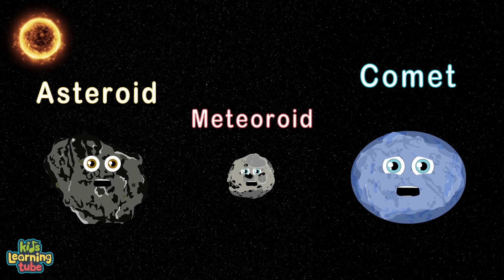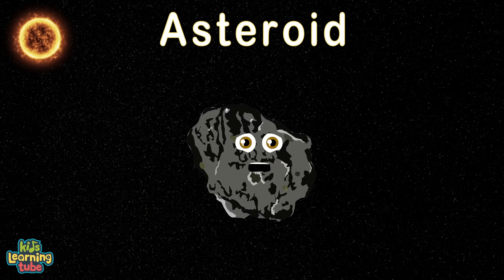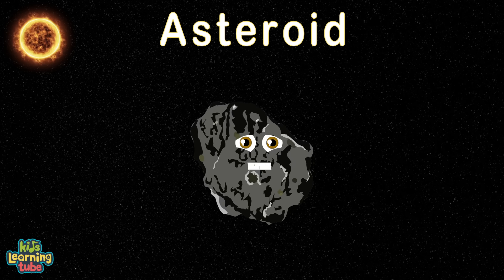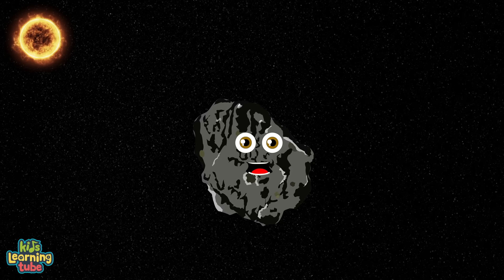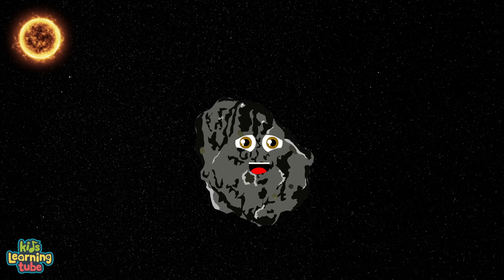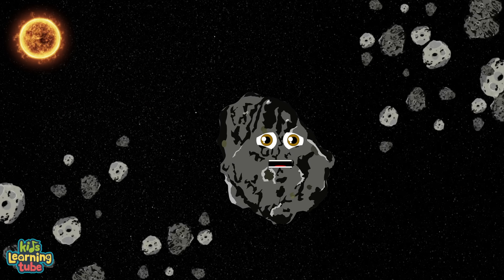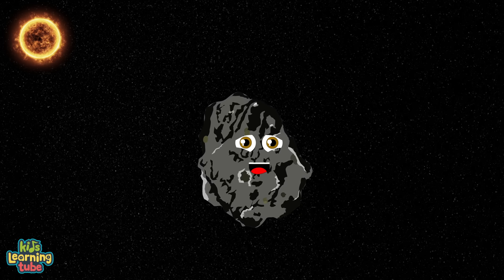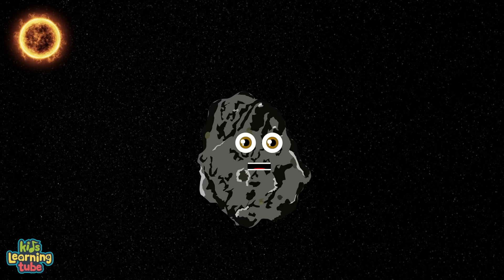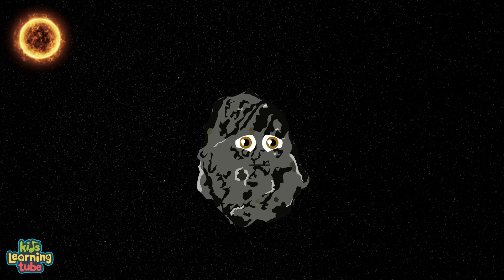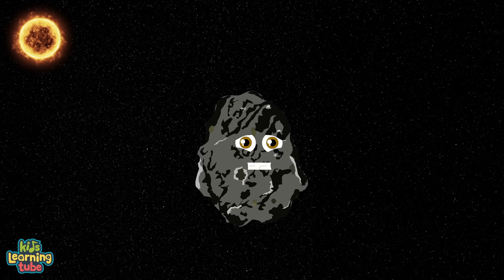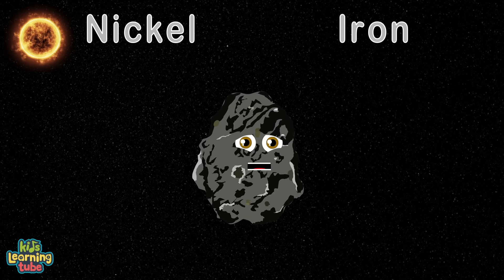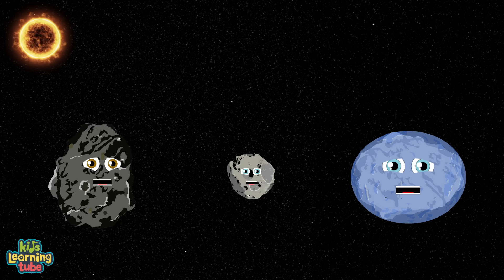I'm an asteroid, also called a minor planet to some — a rocky, airless remnant left over from our solar system's formation. You can find a lot of asteroids orbiting our sun between Mars and Jupiter within the asteroid belt. I can range in size from about 329 miles down to 33 feet small. I've been here for a while; I'm made up of different kinds of rocks, and some have clays and metals such as nickel and iron, found in frying pans or kettles.